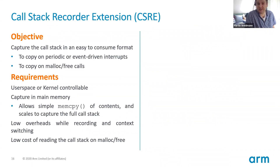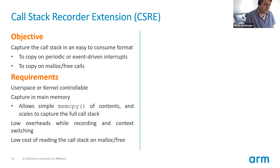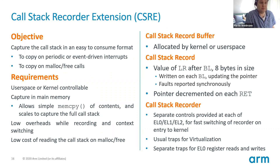The two extensions are CSRE and BRBE. The first is the call stack recorder — an extension that records the call stack. The objective is to produce a call stack automatically in hardware that can be collected easily and in a form that's easy to consume. It's put into memory and can be sampled on something like a periodic interrupt. When enabled, you allocate some memory for the call stack recorder. Every time you do something that looks like a function call, it pushes information onto the call stack; when you do a return, it moves the pointer. So you always have a live view in memory, and this can be controlled separately for different exception levels.